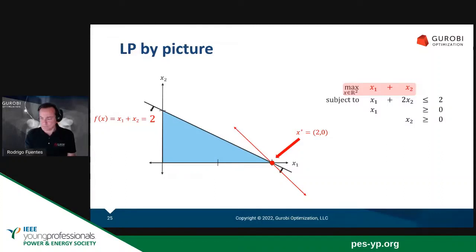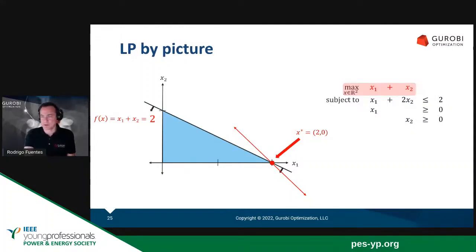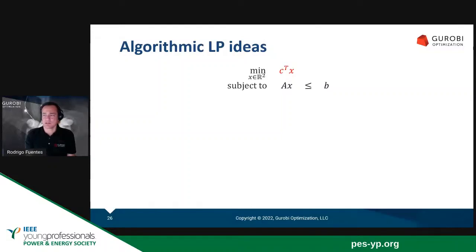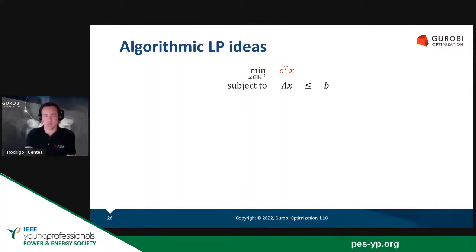We're going to talk now about how to solve this from an algorithmic point of view. The linear programming problem can be written in matrix notation as: minimize C transpose X subject to AX less than or equal to B. Here, the variable X is two-dimensional for the sake of this example. We have two methods to solve linear programming problems.